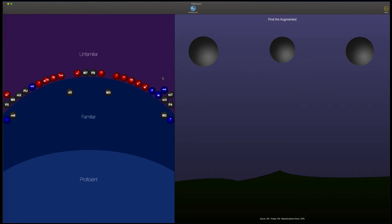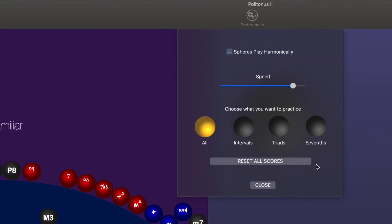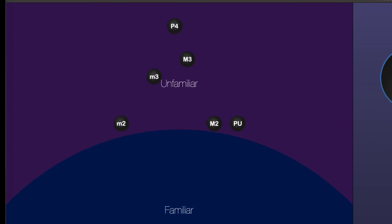Looking at Politonus 2 for the first time on the Mac, you're going to see these two screens. The screen on the left is basically all of our intervals, and it's divided into three sections. The unfamiliar intervals are stored at the top. You'll notice we've been working on it a little bit, so some of these intervals have moved down from the unfamiliar part of the screen into the familiar part and then down here when we get really good at certain intervals. On the right hand side, this is where we're going to be tested when we actually start using the app. Let's start from scratch and go to preferences and reset all scores. Now they're all going back up to the unfamiliar part of the screen.